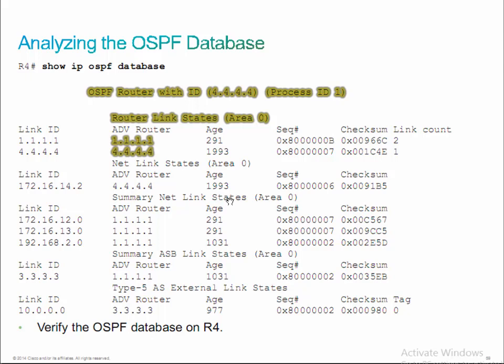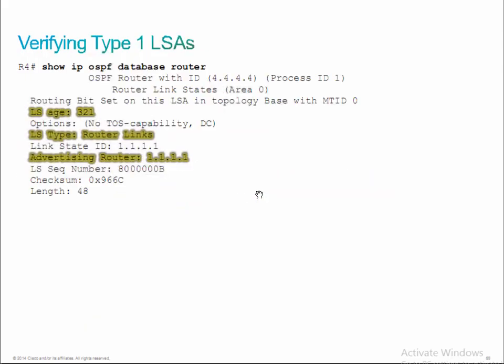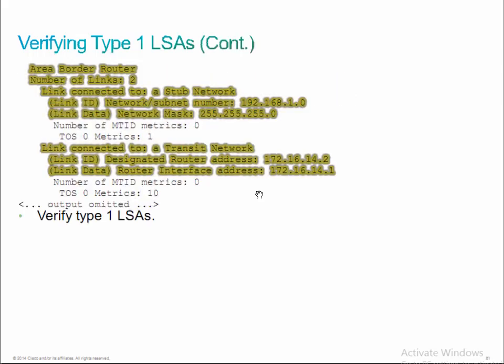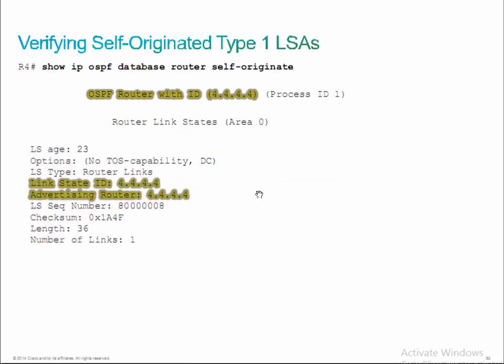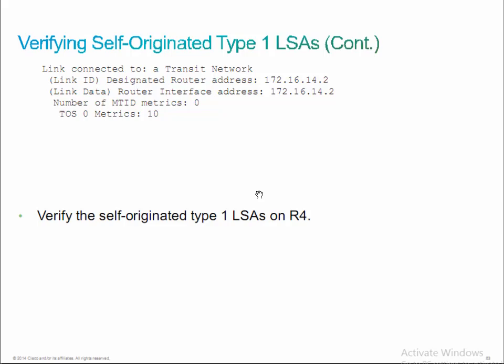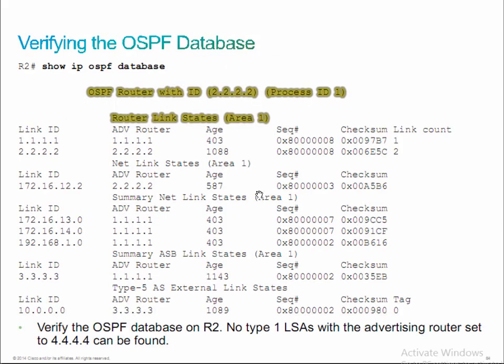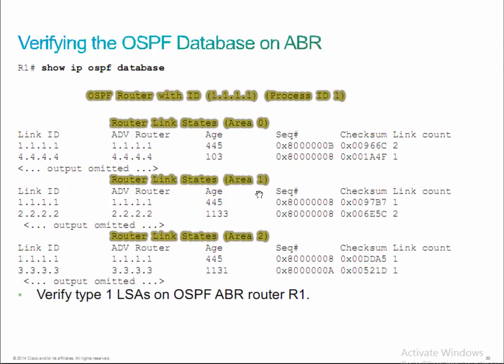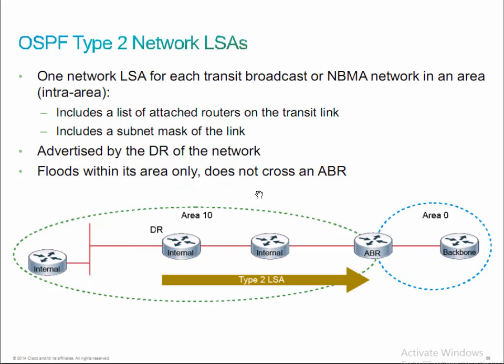Let's go through some of these slides. Type 1 LSAs — router LSAs — we drilled down into the router database. Then we did self-originate to identify what LSAs I was generating. Then we went into router 2 and compared it to the topology diagram. We did the same thing in router 1. Type 2 LSAs are generated for transit broadcast networks or non-broadcast multi-access networks within a particular area. In a nutshell, type 2 LSAs represent the broadcast domain or multi-access network that the DR is responsible for managing.